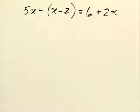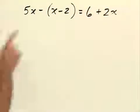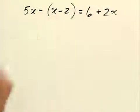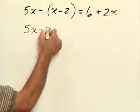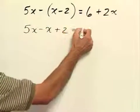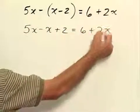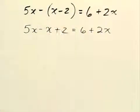To start solving this equation we need to first get rid of the parenthesis. We need to do that by distributing this negative sign through the parenthesis here. So we'll have 5x minus x plus 2 equals 6 plus 2x. Now we're successful in getting rid of the parenthesis.